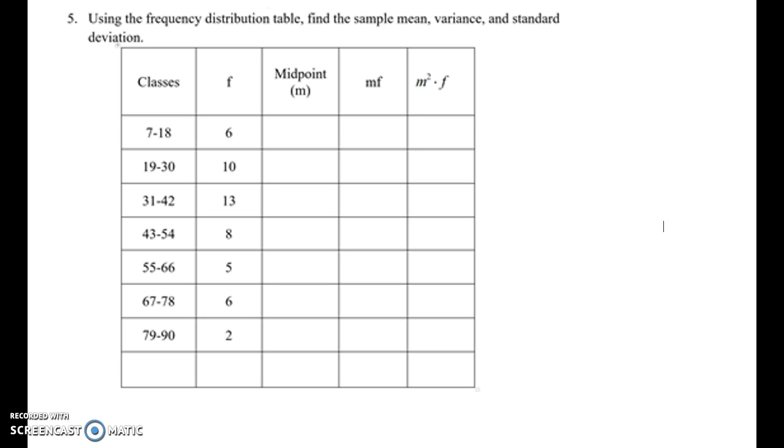So in this case, you combine 7 plus 18 and divide by 2. Then you will get 12.5. That's the midpoint of the first blank.